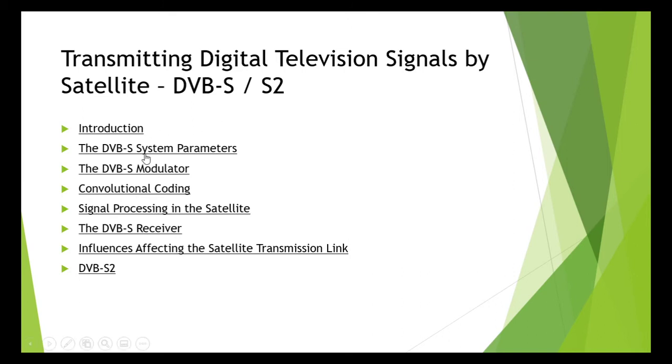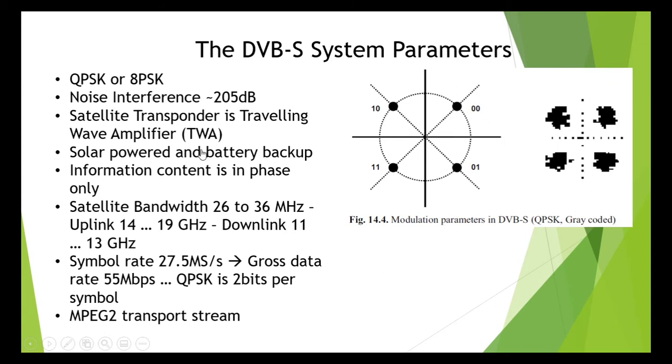Let's discuss about DVB-S system parameters. The modulation method selected for DVB-S was QPSK, quadrature phase shift keying. For some time, the use of 8PSK modulation instead of QPSK has also been considered in order to increase the data rate. In principle, satellite transmission requires a modulation method which is relatively resistant to noise and at the same time is capable of handling severe nonlinearities.